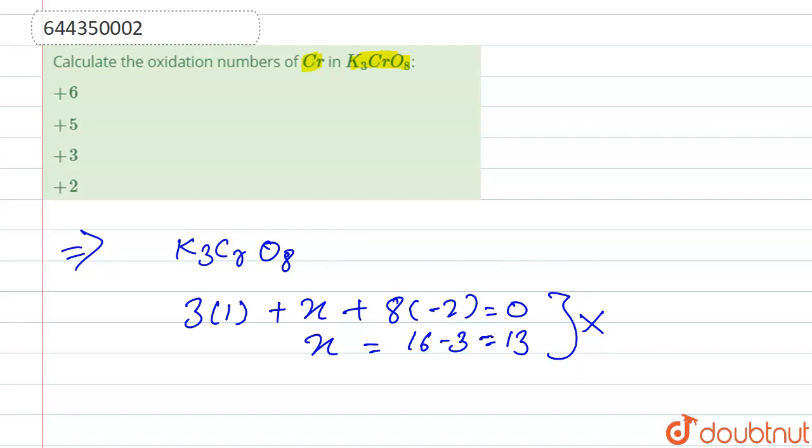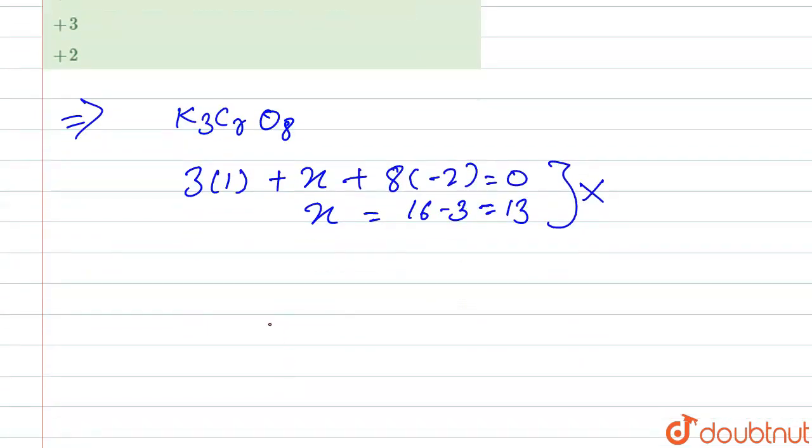So to calculate the oxidation number for chromium, we have to know its structure. The structure of K₃CrO₈ forms a bond with oxygen like this, it is linked with peroxide linkage.